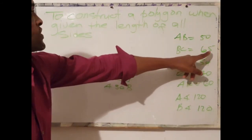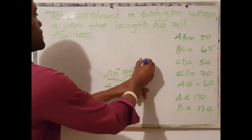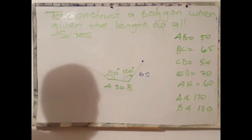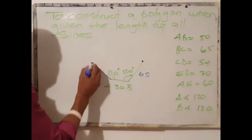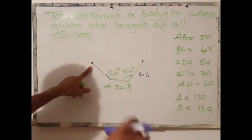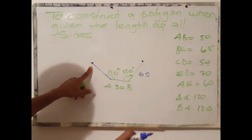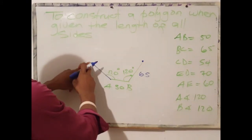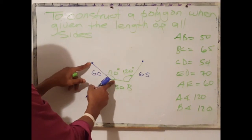Side BC is 65 mm, so BC would be on this side — BC 65 mm. It's good to draw the known first; it's always advisable to do that. Draw or sketch the known first. AE is 60 mm, and it's at an angle of 120 degrees.